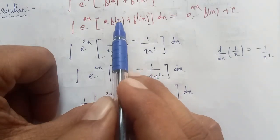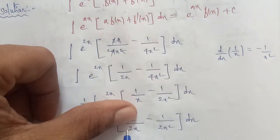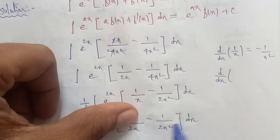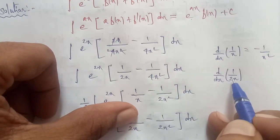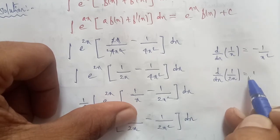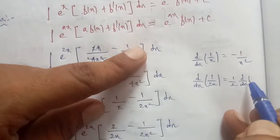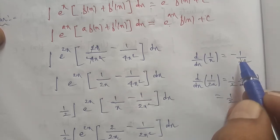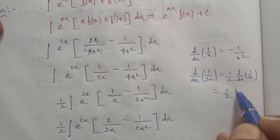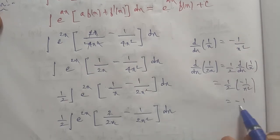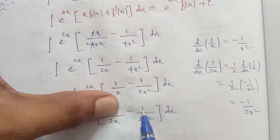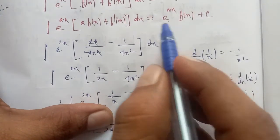We verify: f of x is 1 by 2x. Differentiating, we remove the constant 1 by 2. The differentiation of 1 by x gives minus 1 by x square. So f prime of x equals 1 by 2 times minus 1 by x square, which is minus 1 by 2x square. This matches correctly, confirming our identification.